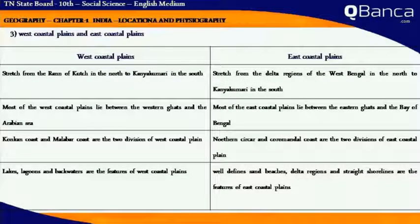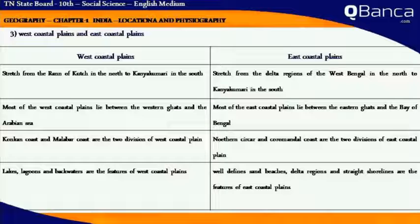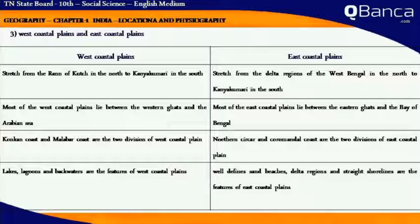Distinguishing between West Coastal Plains and East Coastal Plains: West Coastal Plains stretch from Goa in the north to Kanyakumari in the south and lie between the Western Ghats and the Arabian Sea. East Coastal Plains stretch from the delta region of West Bengal in the north to Kanyakumari in the south and lie between the Eastern Ghats and the Bay of Bengal.